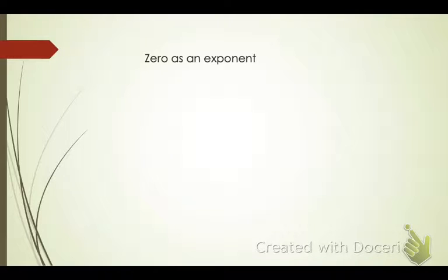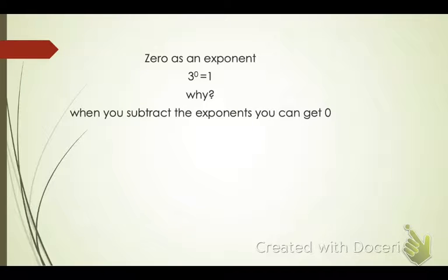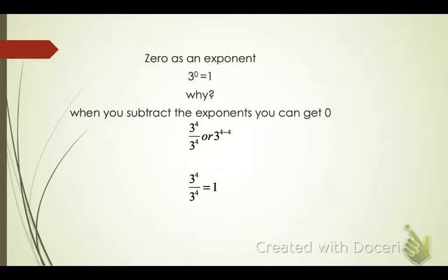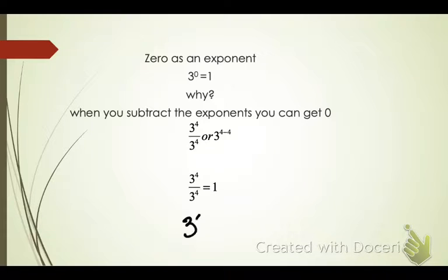What if I have 0 as an exponent? We talked about this earlier. So if I have 3 to the 0, why does it equal 1? Well, this is why — when you subtract the exponents, you can get 0. For example, if I have 3 to the 4th over 3 to the 4th, I can subtract those exponents and I get 3 to the 0 power. We know anything divided by itself equals 1. Therefore, 3 to the 0 power equals 1. And that is why. So write this in your notebooks. If you need to pause the video, go ahead and pause the video.